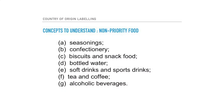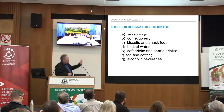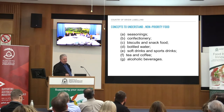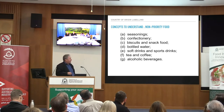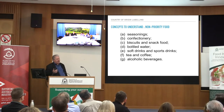Non-priority foods. We managed to convince the government that not every food needed to jump through all these hoops — there are a number of foods, particularly at the more highly manufactured end, where consumers didn't greatly care about where the ingredients came from, more about where it was made. Seven categories came out, called non-priority foods. They still require origin labelling, but the requirements are much less. The categories are: seasonings, confectionery, snack foods, bottled water, soft drinks, sports drinks, tea, coffee, and alcoholic beverages.